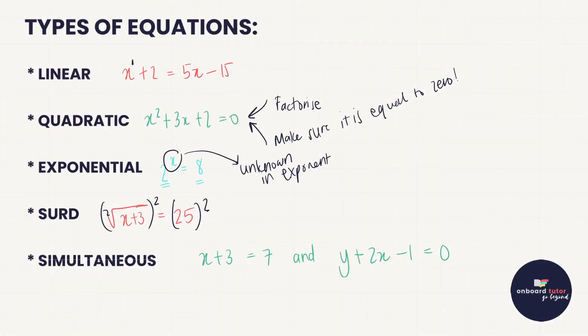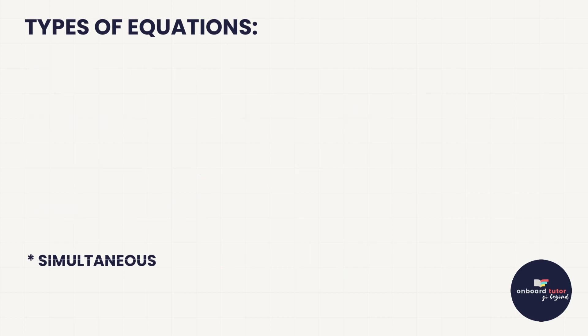We've been working through this section of equations and we've taken a look at a number of the different types of equations that we get. In this video we are going to focus on simultaneous equations, where we are given two equations and they each contain two variables — an x and a y — and we need to then somehow solve them simultaneously.